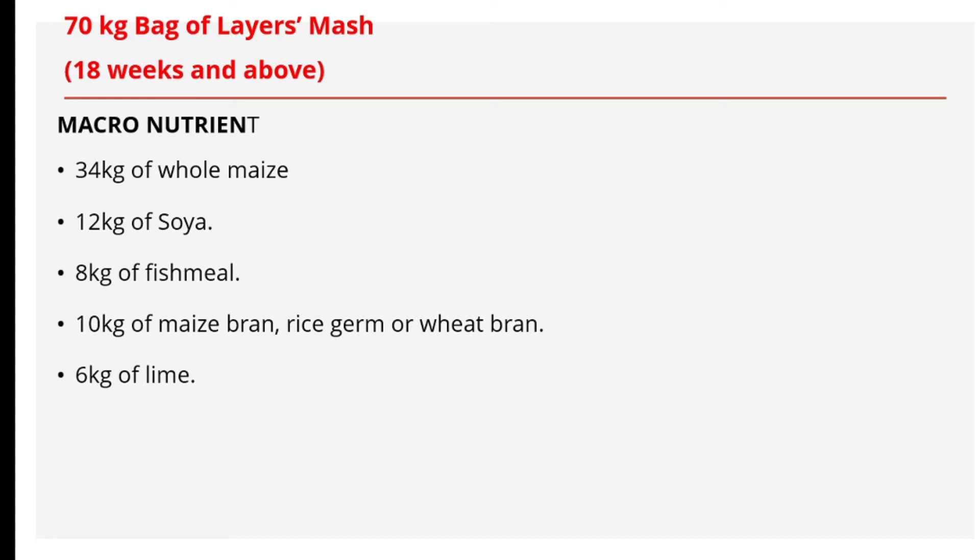Layer mash should be introduced only when the birds reach 18 weeks. You are expected to add 34 kg of whole maize, 12 kg of soya meal, and 8 kg of fish meal. Then add 10 grams of maize bran, rice germ, or wheat bran — any of these can be added to the feed.